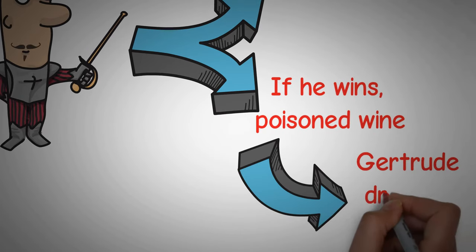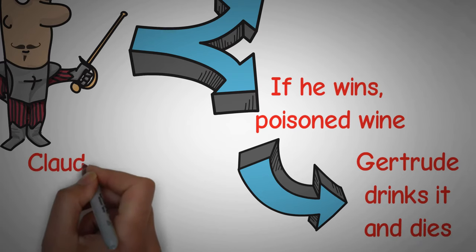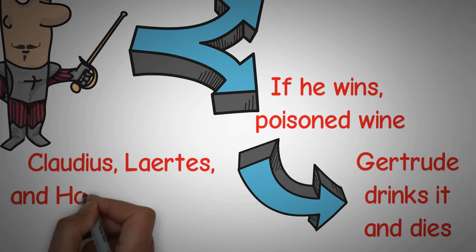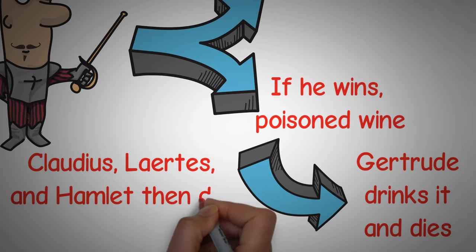Laertes confesses the plot to Hamlet, and Hamlet kills Claudius. In moments, both Laertes and Hamlet die of their poisoned wounds, and now the entire Danish royal family lies dead. The kingdom is taken over by Prince Fortenbras of Norway.